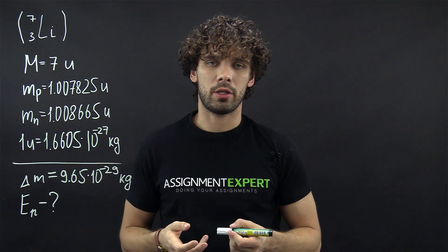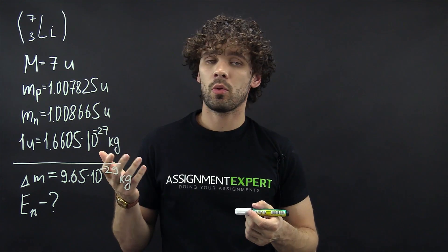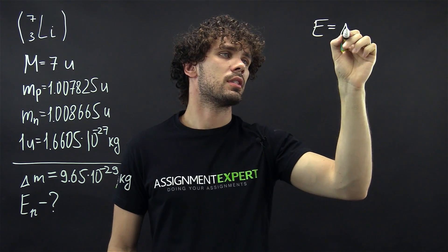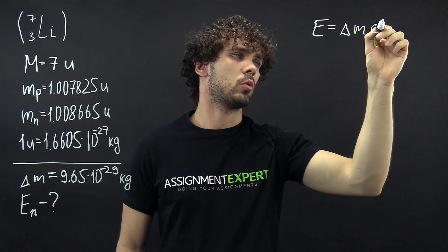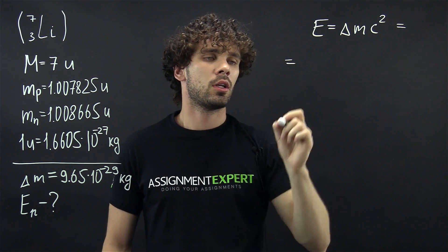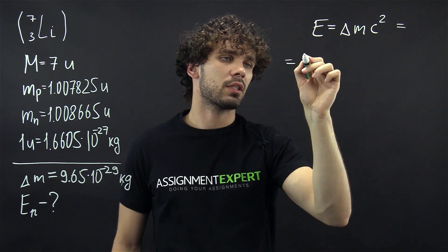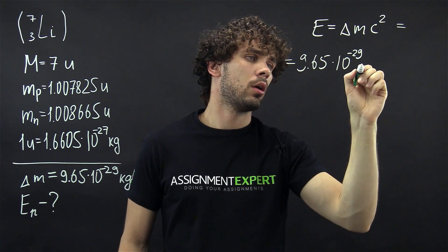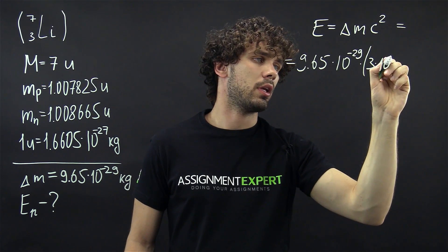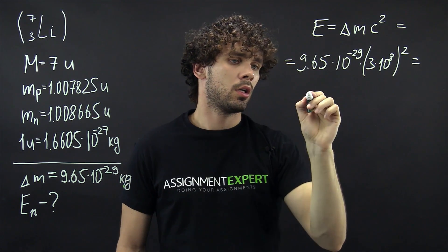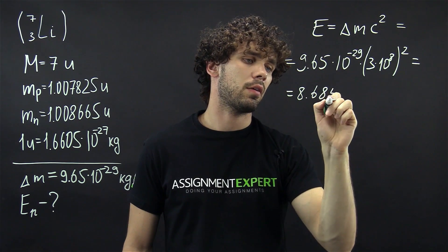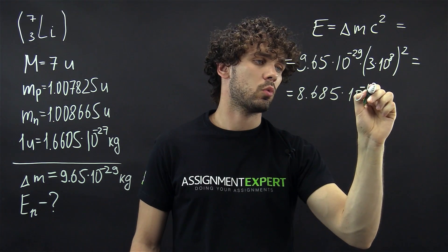Now let's move on and find the binding energy of the individual nucleon. We can do this using the famous Einstein formula: E equals Delta M times c squared. In our case we have 9.65 times 10 to the negative 29th multiplied by (3 times 10 to the 8th) squared. This gives us 8.685 times 10 to the negative 12 joules.